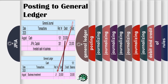Next, post the debit figure from the journal as a debit figure in the ledger. The same applies when the account is a credit account title — the credit figure from the journal will be posted as a credit figure in the ledger. Third, enter the account number in the posting reference column of the journal once the figure has been posted to the ledger.